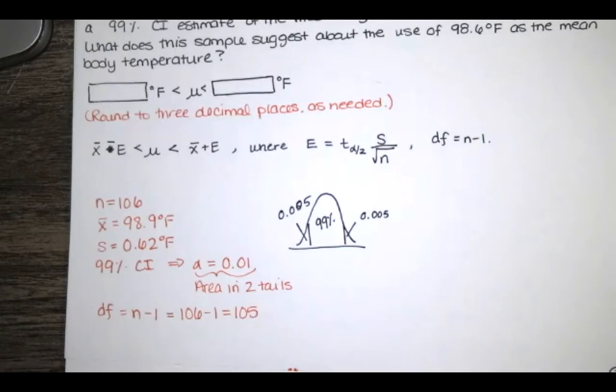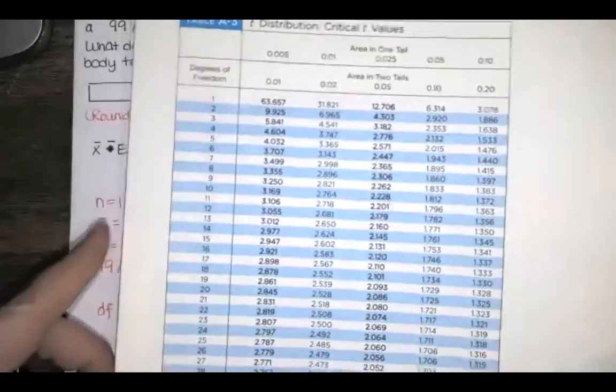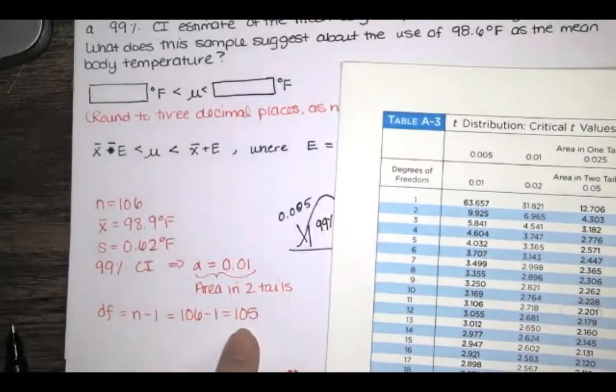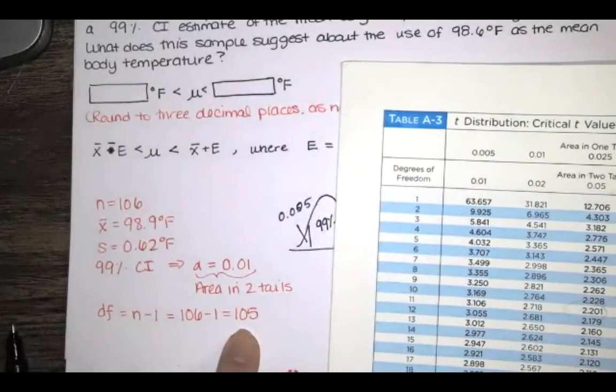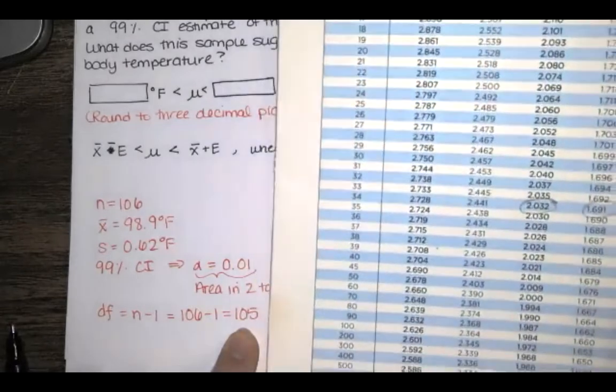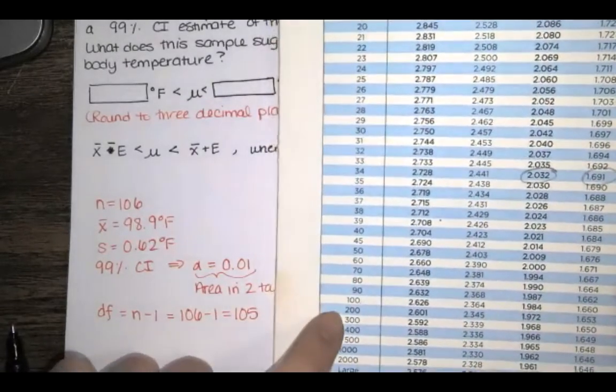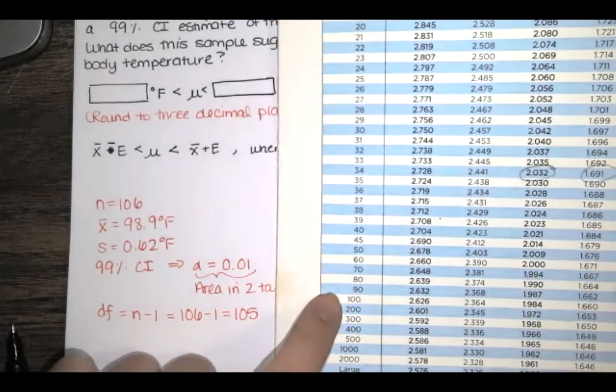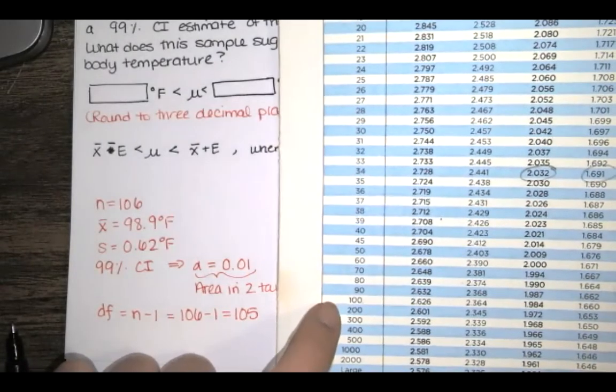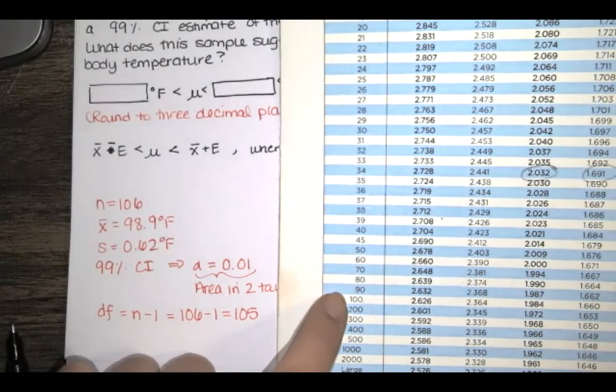I'll go to my table. You'll have access to this during the exam. I'm looking for the page with all those critical T values, the student T distribution. Here it is. I need 105 to be my number of degrees of freedom. We don't actually have 105 degrees of freedom on this table. Whenever that happens, we always round down.